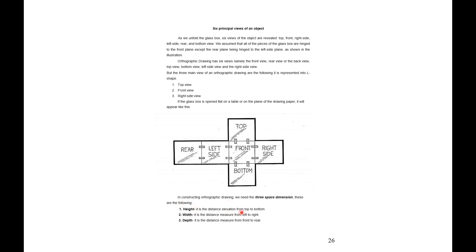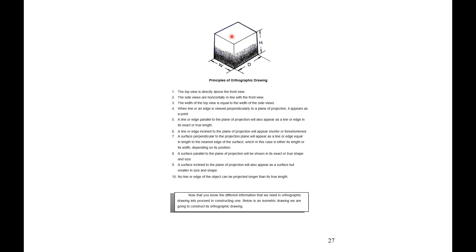Height is the distance elevation from top to bottom. Width is the distance measured from left to right. And depth is the distance measured from front to rear. Considering this cube, we have the height — the distance from top to bottom — the depth — the distance from front to rear — and the width — the distance from the left side of the object to the right side.